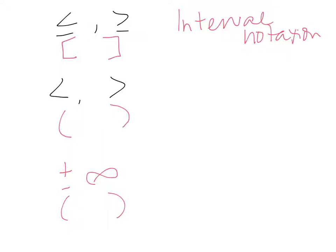We've evolved past the open dot and close dot situation, so I want you to be using parentheses and brackets, not the open dot and close dot. Interval notation is a direct translation because we'll be putting these on a number line.